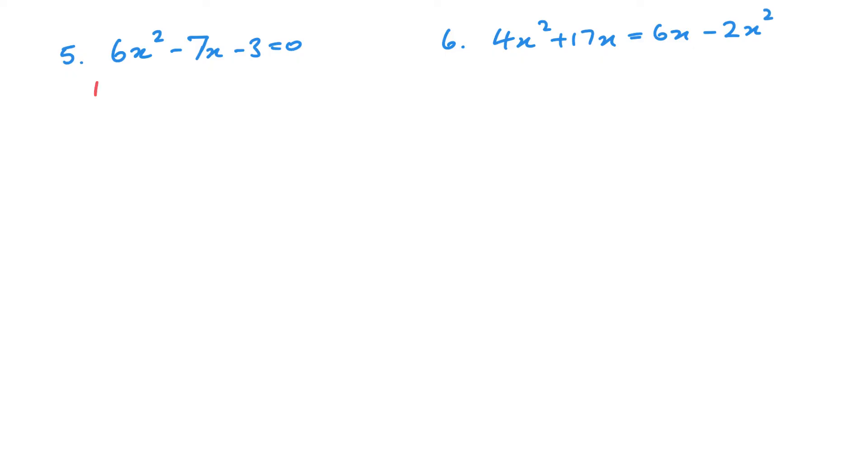Question 5. To make 6, it would be 1, 6, 2, and 3. To make 3, it can only be 1 and 3. It's going to be negative 3 at the end, so one of these is positive and one is negative. I just want to try and get to the 7. 1 and 18, no way to get to 7. 6 and 3 again, can't get to 7. These two are gone. If it factorizes, it would have to be these two.